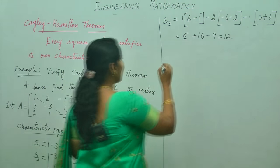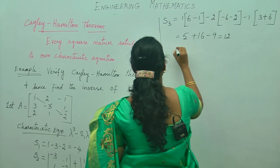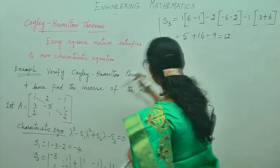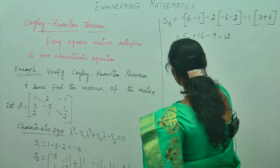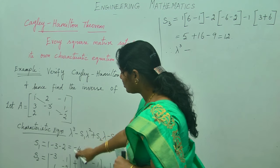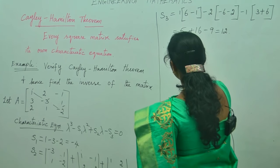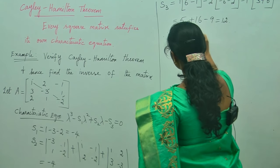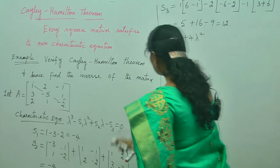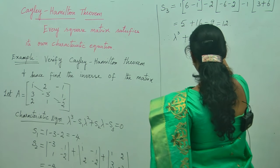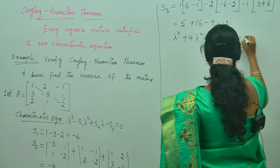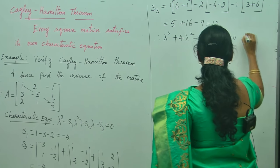Now write down the characteristic equation. The characteristic equation is: lambda cubed minus S1 lambda squared plus S2 lambda minus S3 = 0. Substituting: lambda cubed + 4 lambda squared minus 4 lambda minus 12 = 0. This is the characteristic equation.